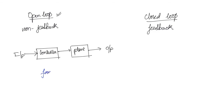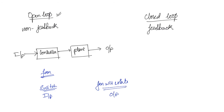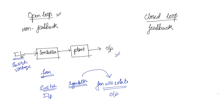Let us consider a fan. To switch on a fan you will need a switch, and a switch essentially means we are giving some voltage to it. Once you switch on the fan, the fan will rotate — this is the input, and the fan rotation is the output. In between you will also have the fan regulator, where you can set different speeds. In this diagram, the input for the fan will be the switch — or the voltage given to it — and the controller will be the fan regulator.